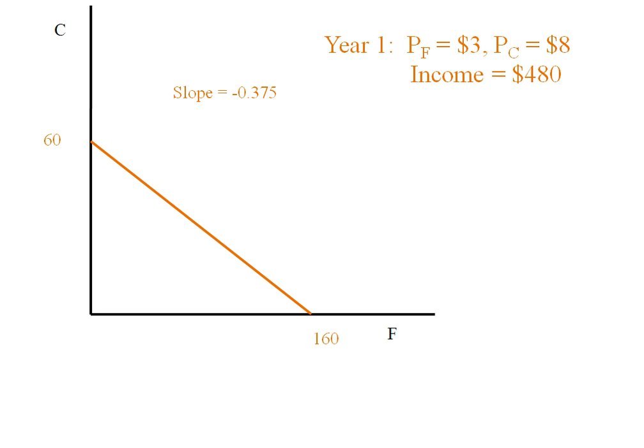The slope of this line will be negative 3/8ths or negative 0.375. Let's suppose we know that this consumer's optimal bundle has 80 units of food and 30 units of clothing. So I can mark on a general tangency condition and that bundle.